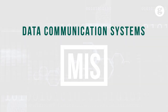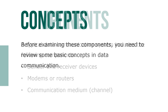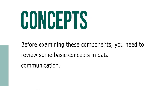Let's take a look at data communication systems. A typical data communication system includes the following components: sender and receiver devices, modems or routers, and a communication medium like a channel. Before examining these components, you need to review some basic concepts in data communication.